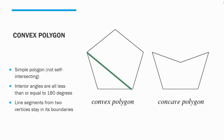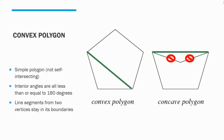So if we were to draw a line, the convex polygon stays within it — on the right, it doesn't. As a quick look ahead to how convex hull algorithms work, if we were to delete both of those points and add that one, we would have a convex polygon. In this case, it would be creating the convex hull of that shape.